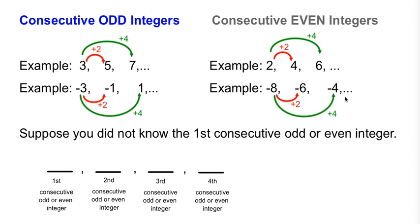Now what if I told you that you did not know the value of the first consecutive odd integer or even integer? In that case we're going to call it x.